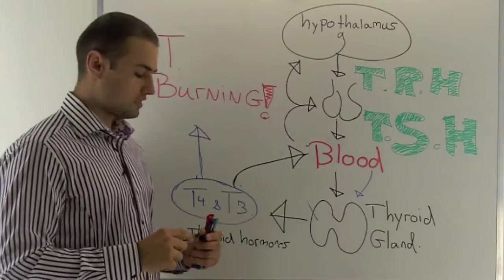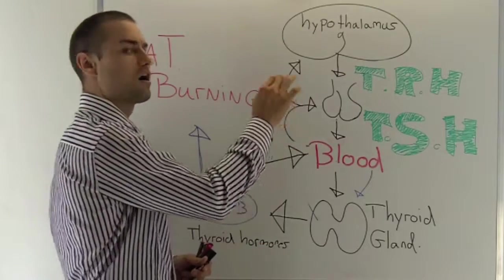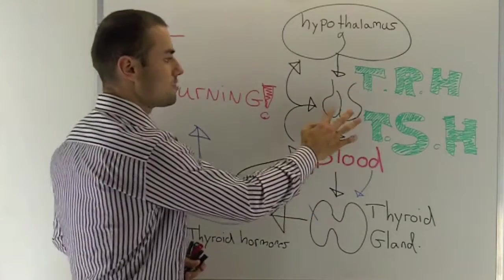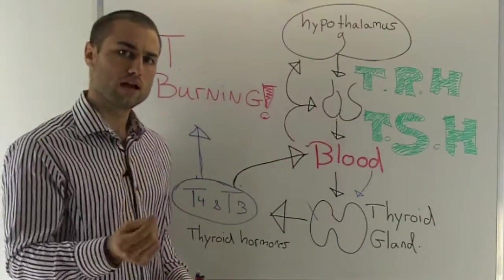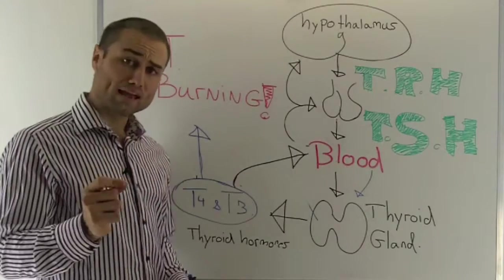So the hypothalamus releases a hormone, just for short, I don't want to complicate anything today, we'll call it TRH. The TRH hormone stimulates your pituitary gland right here. So the pituitary gland wakes up, it's happy, it's excited, it gets to work.